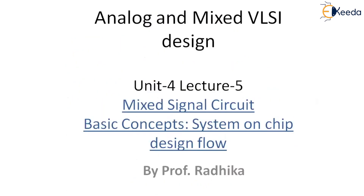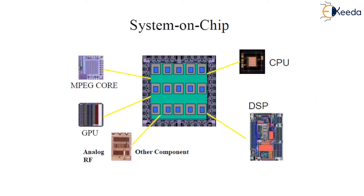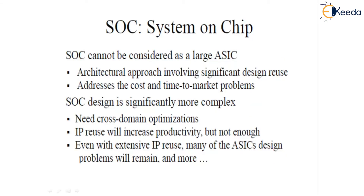The System on Chip cannot be considered simply as a large ASIC, as the architectural approach involves significant design reuse and addresses cost and time-to-market problems. As shown in the diagram, an SoC includes an application processor core, GPU, DSP, CFPU, and other components including analog, RF, and digital blocks. This SoC design is significantly more complex.